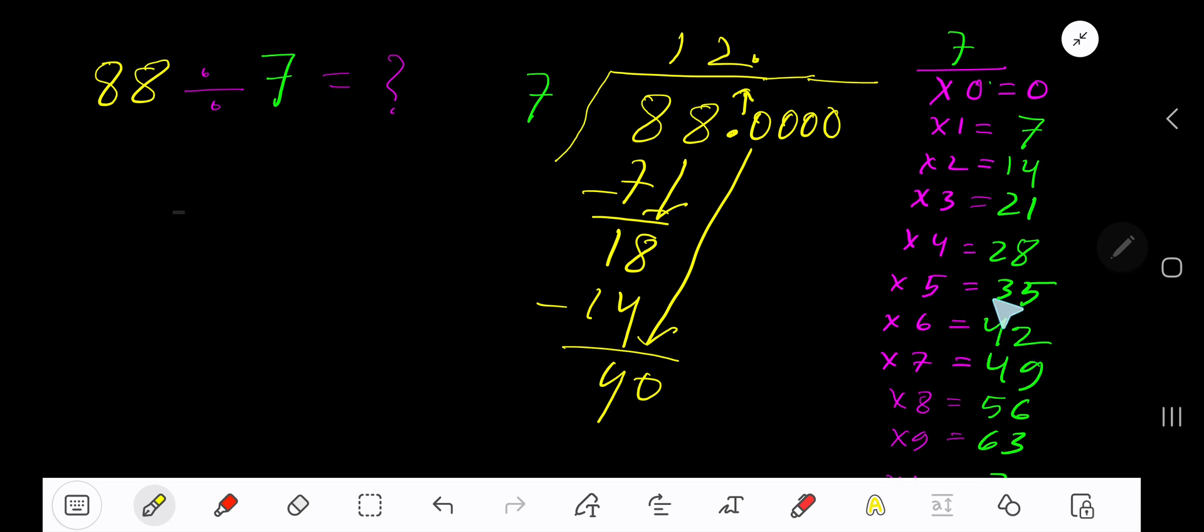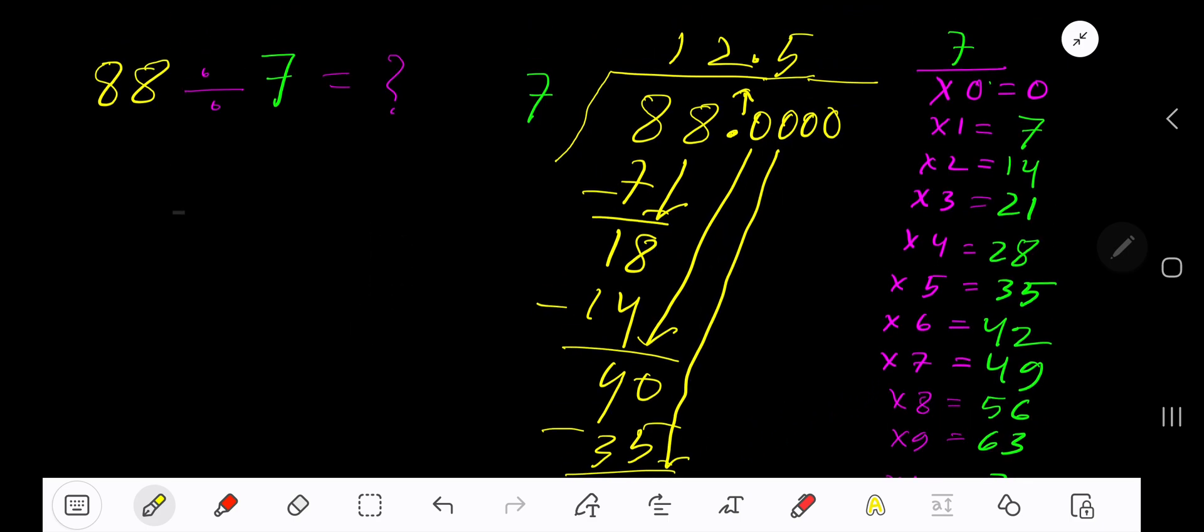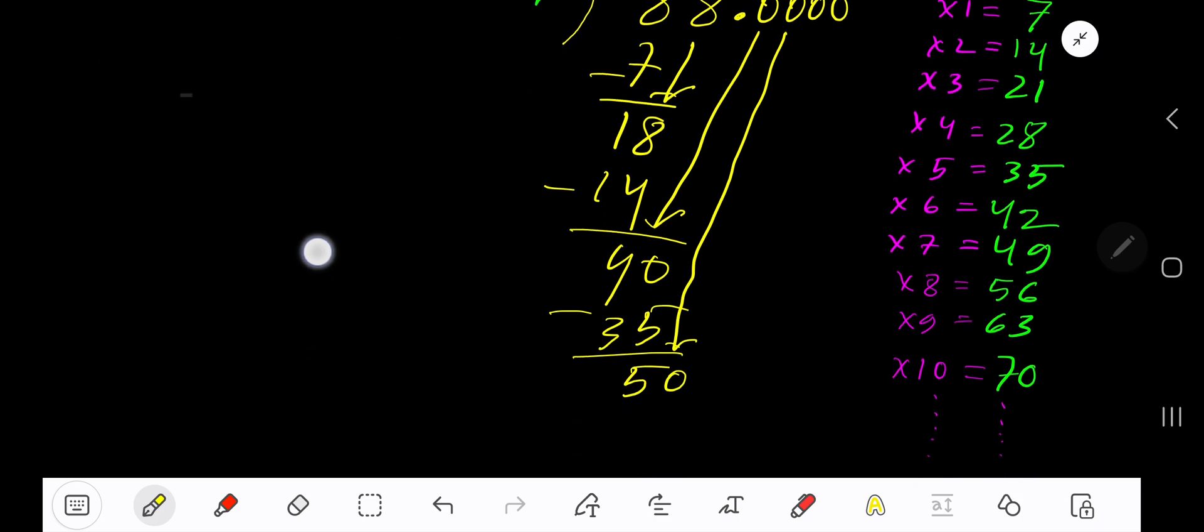5 times 7 is 35, subtract to get 5, bring down the next 0. 7 goes into 50 how many times? 8 times 7 is 56, which is greater, so 7 times. 7 times 7 is 49, subtract to get 1.